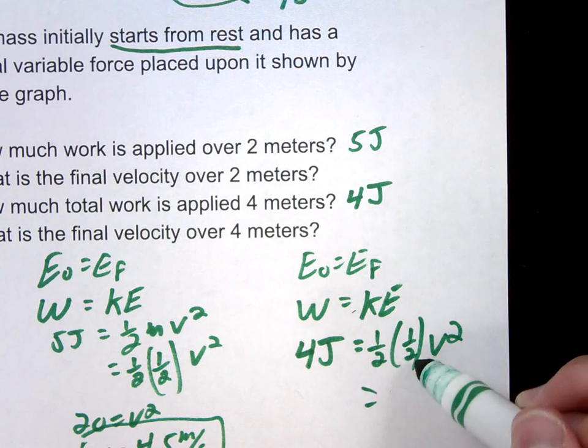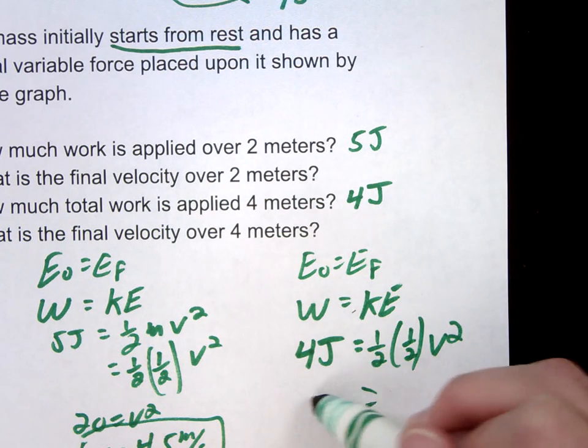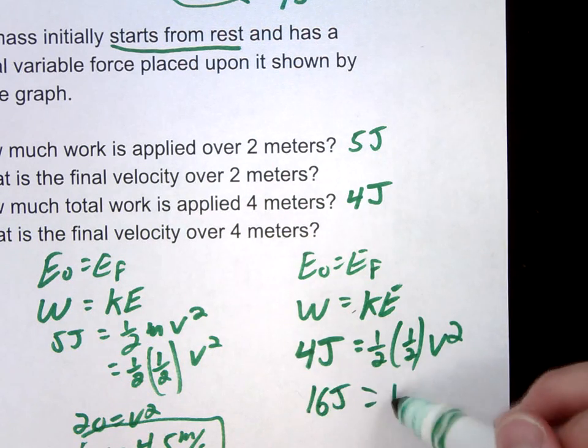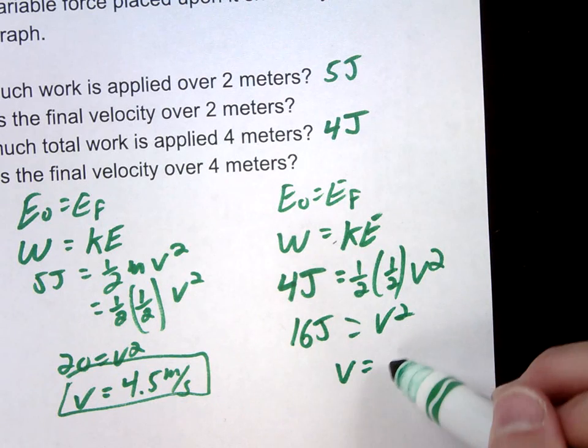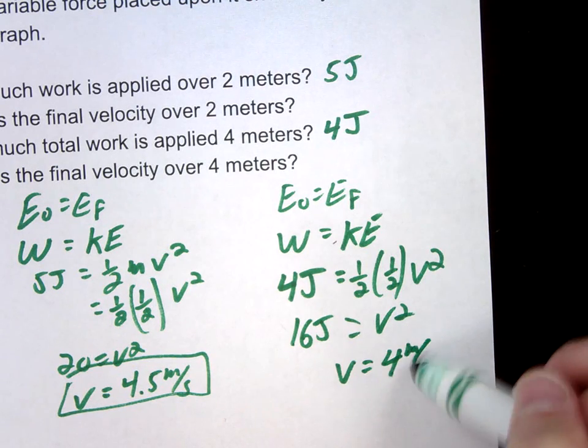So 1/2 and 1/2 gives us 1/4, times 4 is 16 equals V squared. And I don't need a calculator for this. We're going to get 4 meters per second.